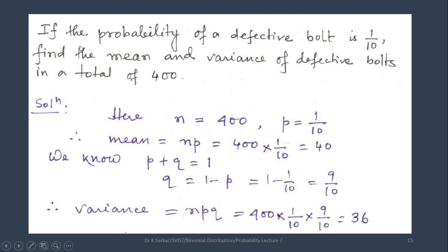Here is a question: If the probability of a defective bolt is 1/10, find the mean and variance of defective bolts in a total of 400. So n = 400 and p = 1/10. Mean = np = 400 * (1/10) = 40. Since p + q = 1, q = 1 - p = 9/10. Variance = npq = 400 * (1/10) * (9/10) = 36.